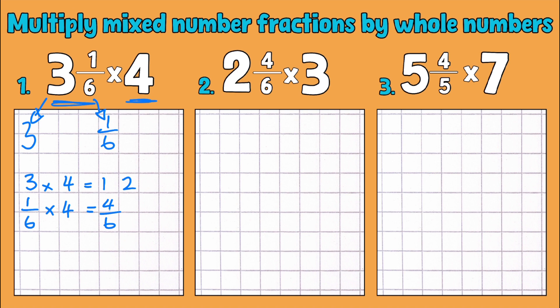And then all we do is add those back together. We've partitioned, we've worked them out, now we've put them back together. So 12 add four sixths equals 12 whole ones and four sixths.